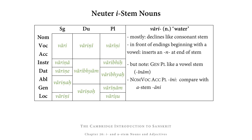Neuter I stem nouns mostly decline like consonant stems because in front of endings that begin with a vowel, they insert an N between the stem and the ending. Let's look at the forms of wari, a neuter I stem noun meaning water. In the singular, nominative, vocative, and accusative are just the stem with no ending: wari. In the other singular cases, endings begin with a vowel, so an N is added between the stem and the ending. Because of the R in wari, the N retroflects into ṇ, giving us wariṇa, wariṇe, wariṇach, wariṇach, wariṇi.